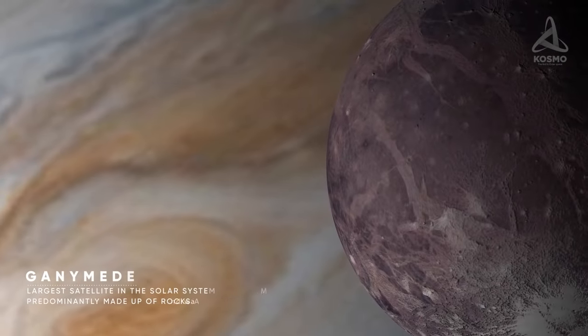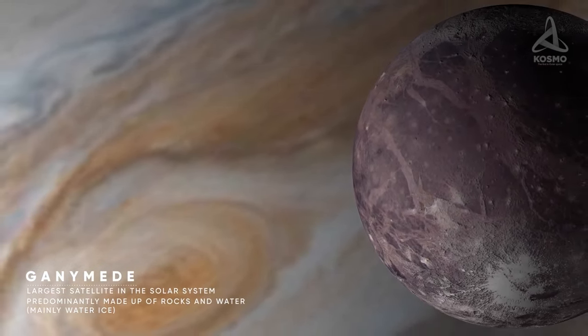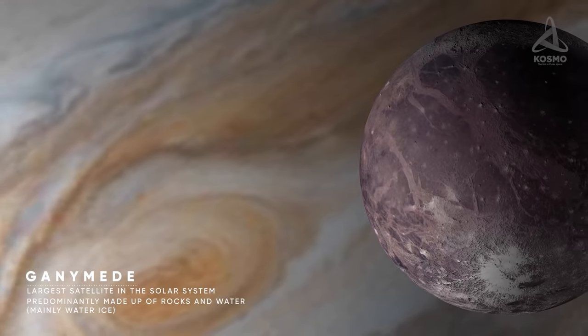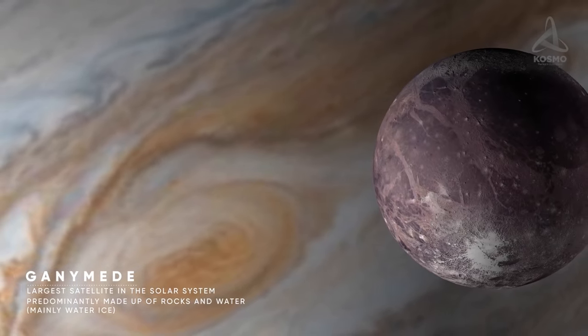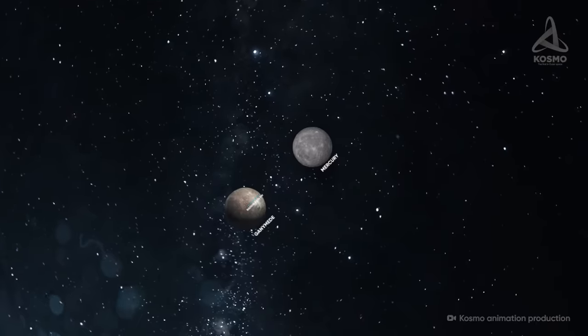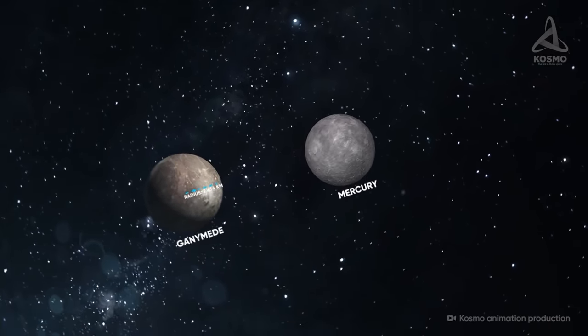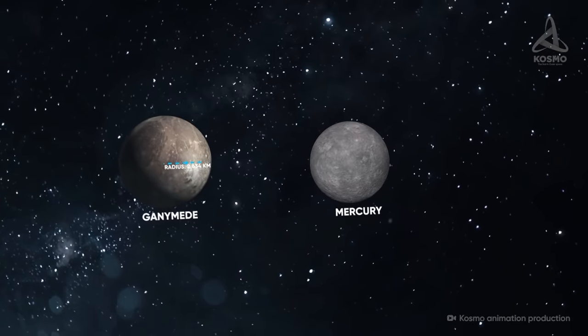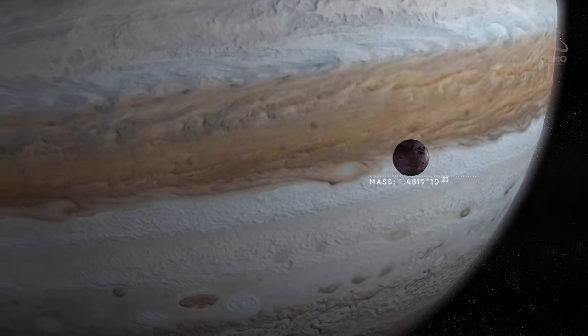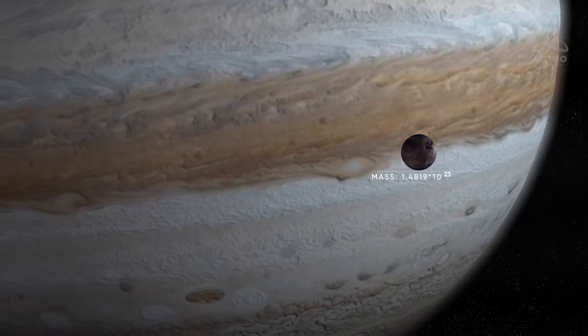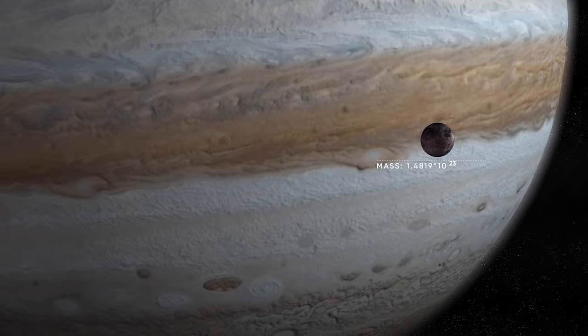Ganymede is the largest and most massive celestial object in Jupiter's environs. Of all the satellites in the solar system, it is not only the one sporting the most impressive dimensions, but it also resembles a real planet more than any other. Ganymede's radius measures 2,634 kilometers, which is 8% more than that of Mercury. As for its mass, it equals 1.48 times 10 to the power of 23 kilograms.